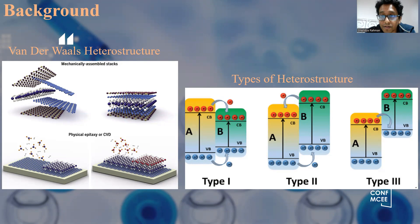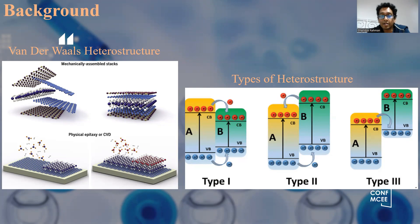These heterostructures can be functionalized into many different kinds of sensors and have many different applications in optoelectronic devices. Heterostructures are usually formed into three different types: type 1, type 2, and type 3.